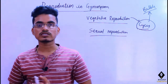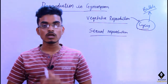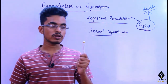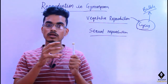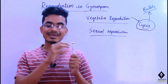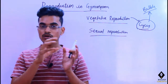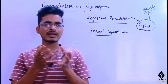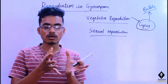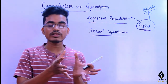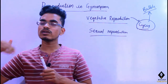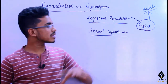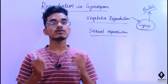Vegetative reproduction is when some part of a plant body gets divided, and that particular divided part gets organized and, by consuming all the nutrients from the surroundings, it develops into a new sporophyte. That is the method of vegetative reproduction.